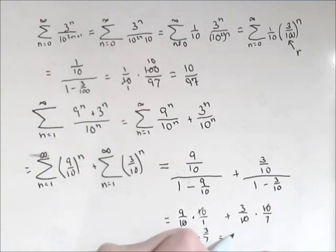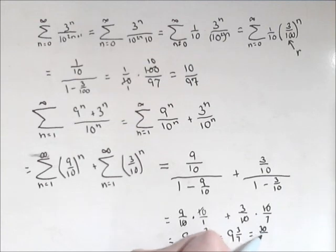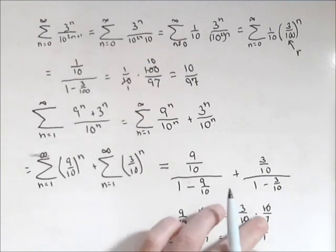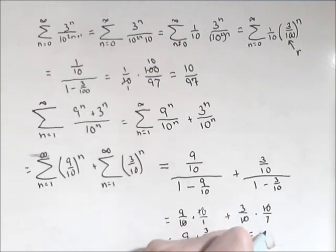So our solution is 9 and 3 sevenths, or if we want to do it as an improper fraction, 66 sevenths.